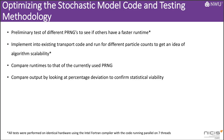To test for optimization, the identified random number generators were first simply run to generate a varying amount of random values to get an idea of their runtimes. Then they were implemented into the model and run for different particle counts to gain insight into their statistical viability along with their scalability. As a side note, all of the tests were performed on identical hardware, with Intel processors and the code running in parallel on 7 threads.